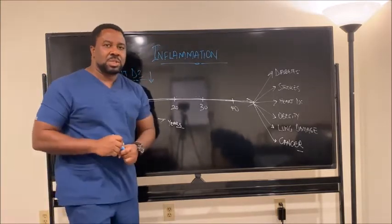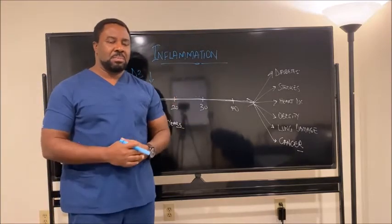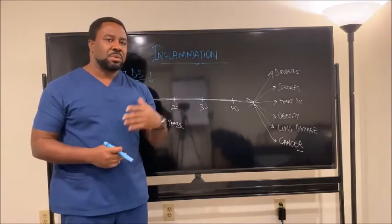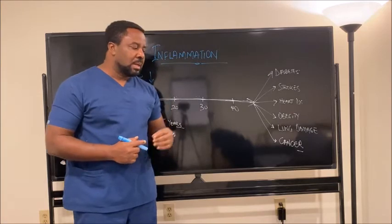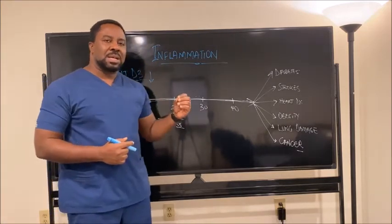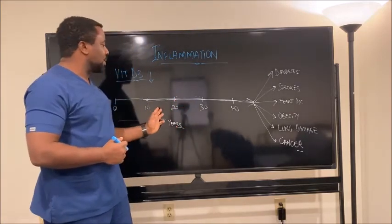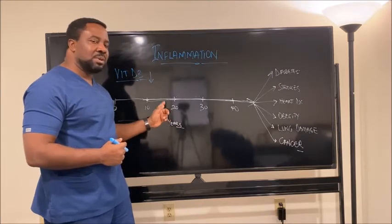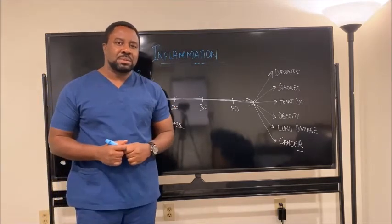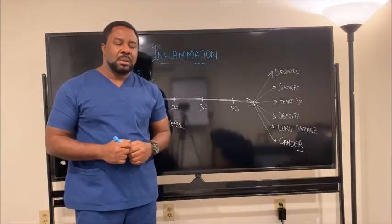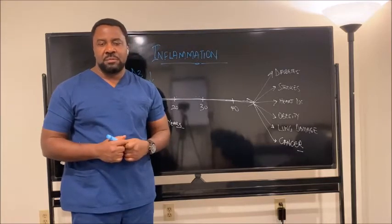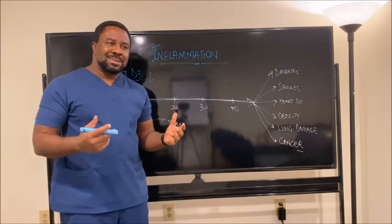Our vitamin D levels are low. Why is that important? Vitamin D is so crucial for everything from brain development to immune function to control of inflammation. If your vitamin D levels are low from childhood, that means that your ability to control inflammation will be low. Your immune function will be low.